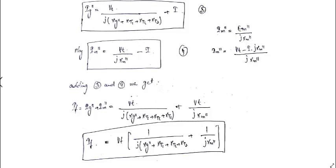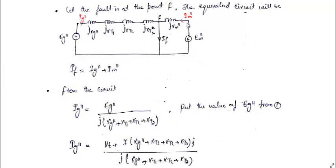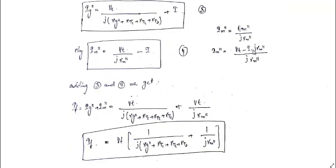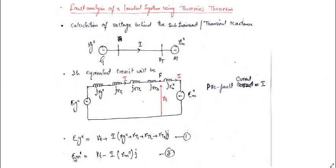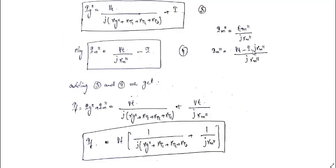During the fault, Im double dash = Em double dash divided by jXm double dash. Substituting equation 2 — replacing Em double dash with Vt minus I times jXm double dash — it simplifies to Vt divided by jXm double dash minus I. So from these two equations we can calculate the values of Ig double dash and Im double dash.